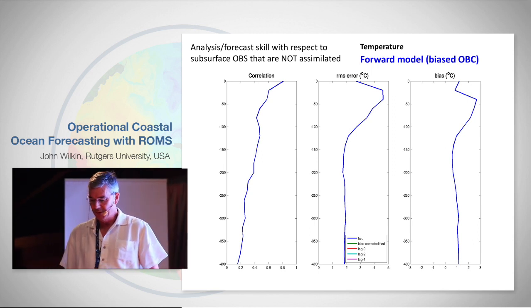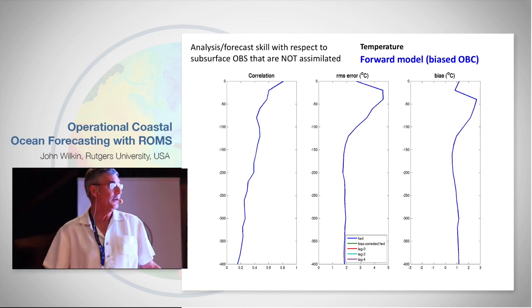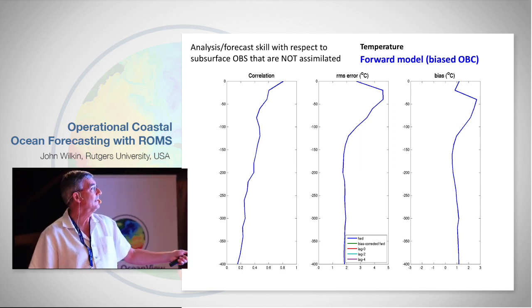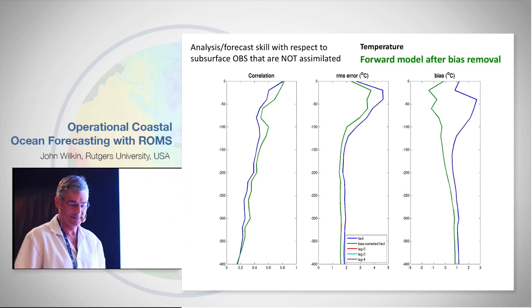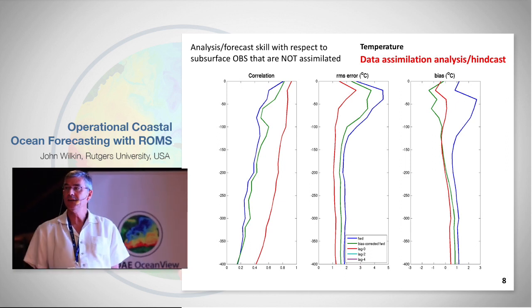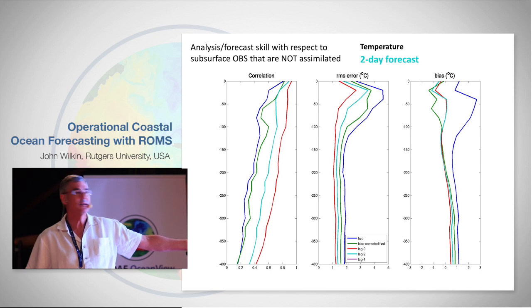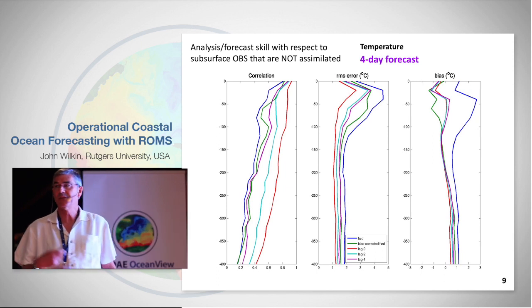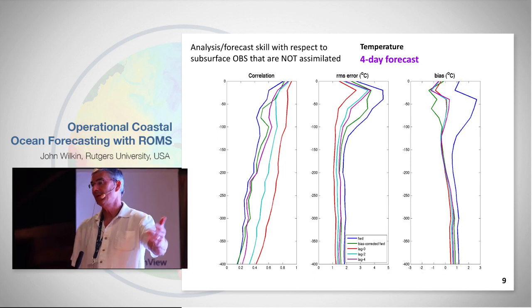Or you can verify with in-situ observations down to about 400 meters — mostly XBTs off the shelf but also in shallow water. We can see that if you don't correct the bias, you get lower correlations; if you correct biases in the boundary conditions, we get better correlations and lower biases. Then with assimilation the analysis improves significantly — we've got the wiggles in the right places. In forecast mode, after two days we start losing some skill against unassimilated observations. After four days we're getting down to the correlations of the free-running model, suggesting the useful skill from data assimilation persists for about three days into the future.